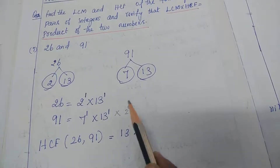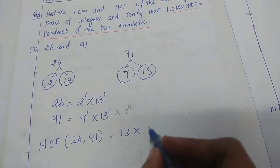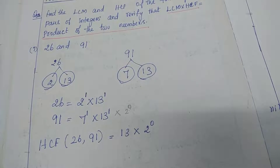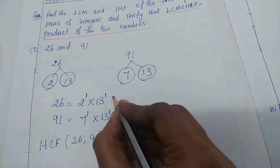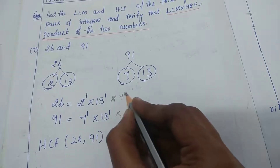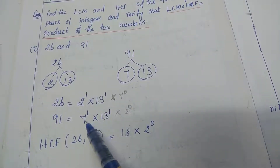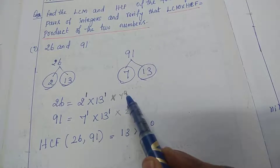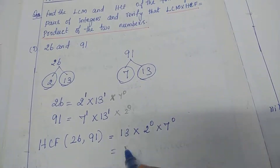For factor 2: the powers are 1 and 0. The least power is 0, so we write 2 to the power 0. For factor 7: the first line has no 7, so we write 7 to the power 0. Comparing powers of 7 — here 1 and here 0 — the least power is 0, so we write 7 to the power 0. That means 13 into 1 into 1, therefore HCF equals 13.